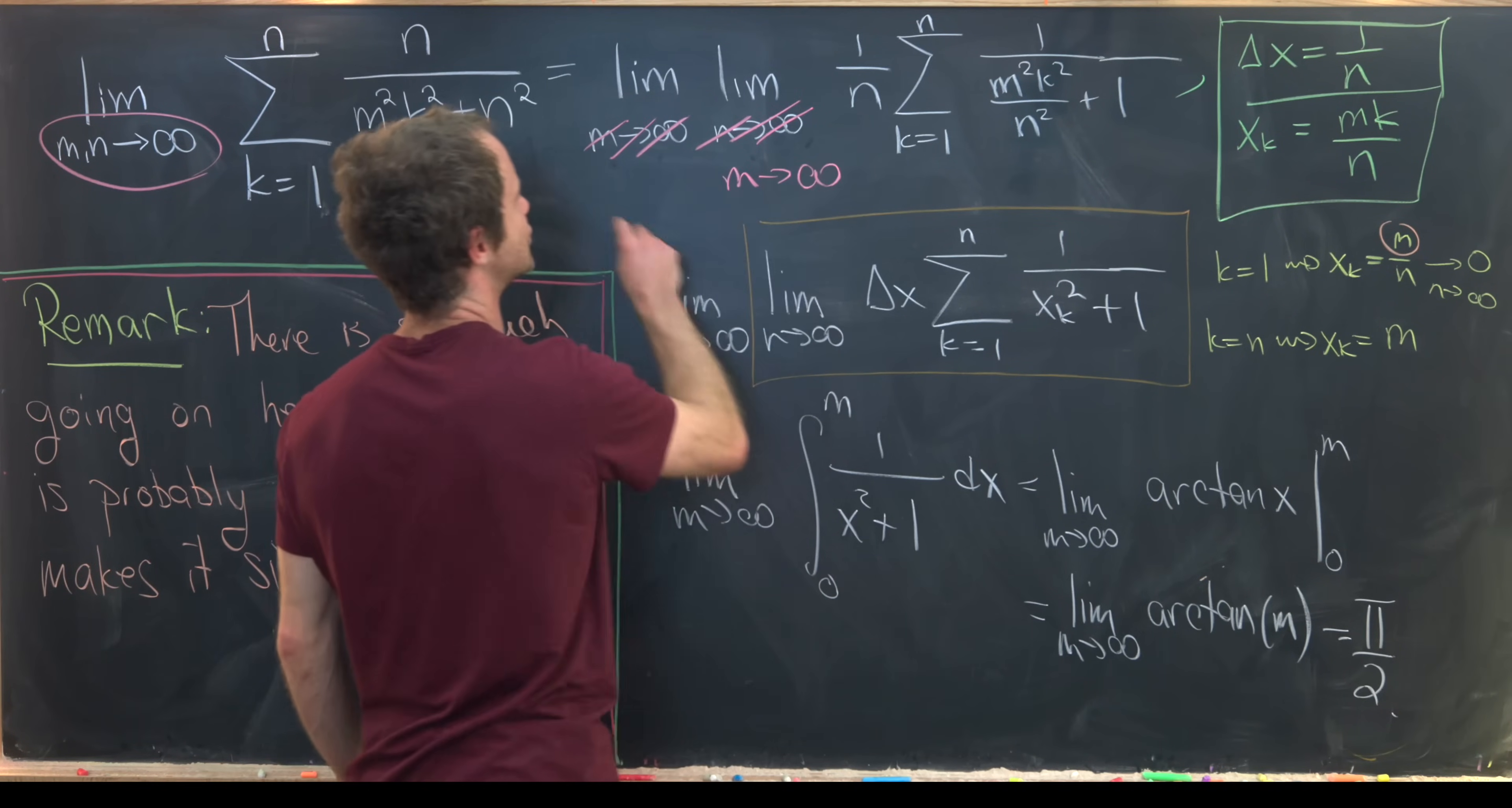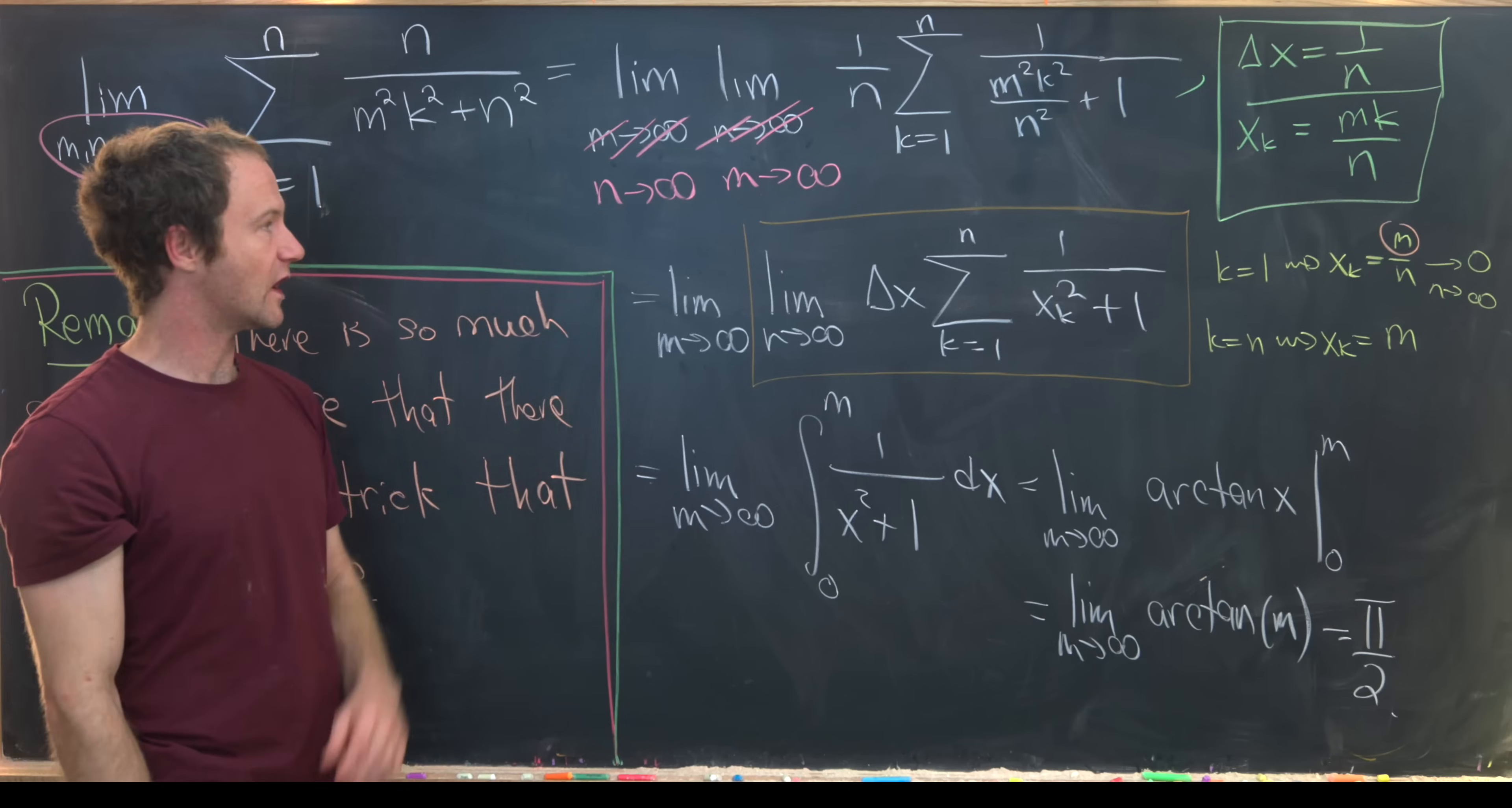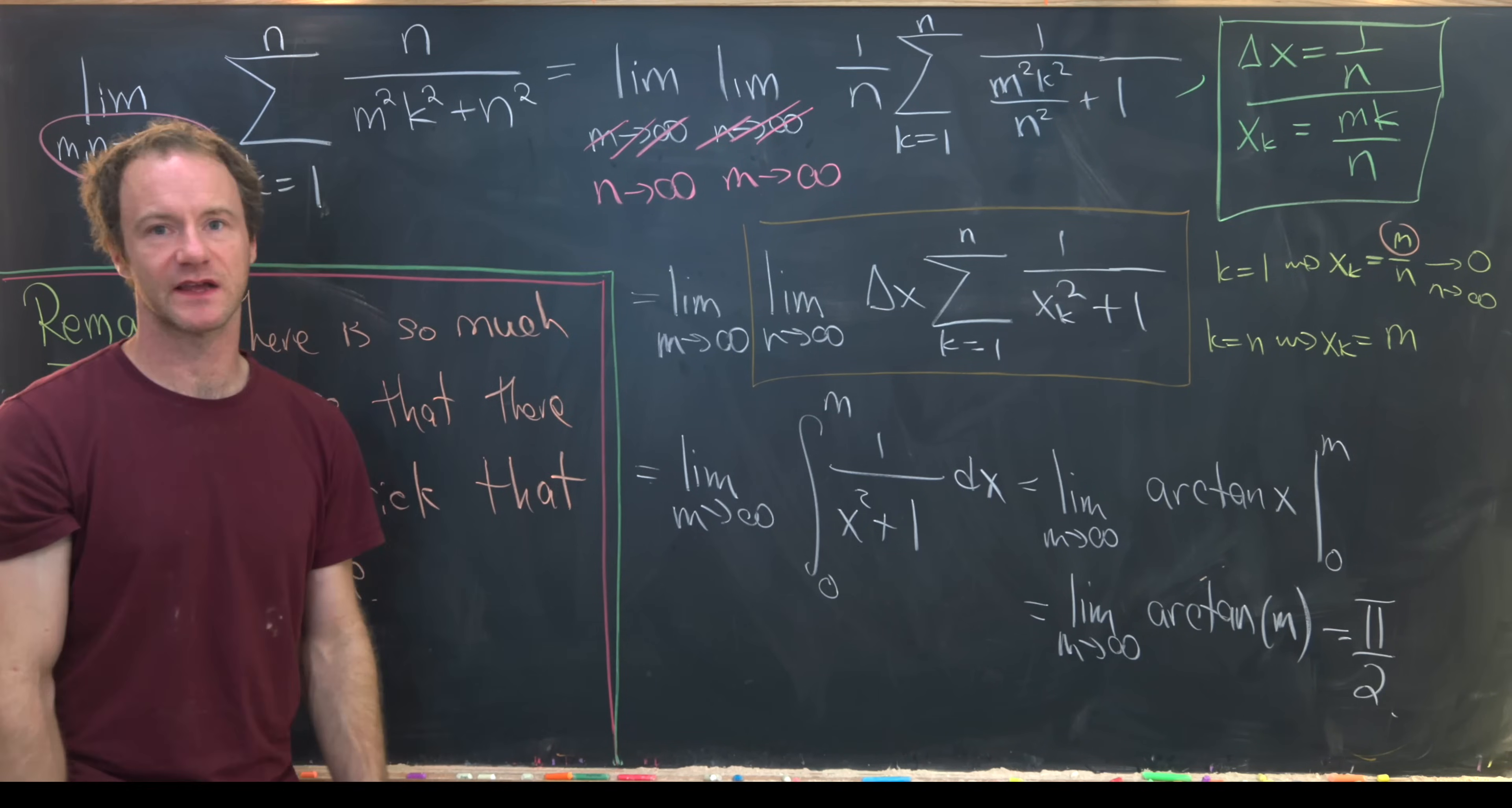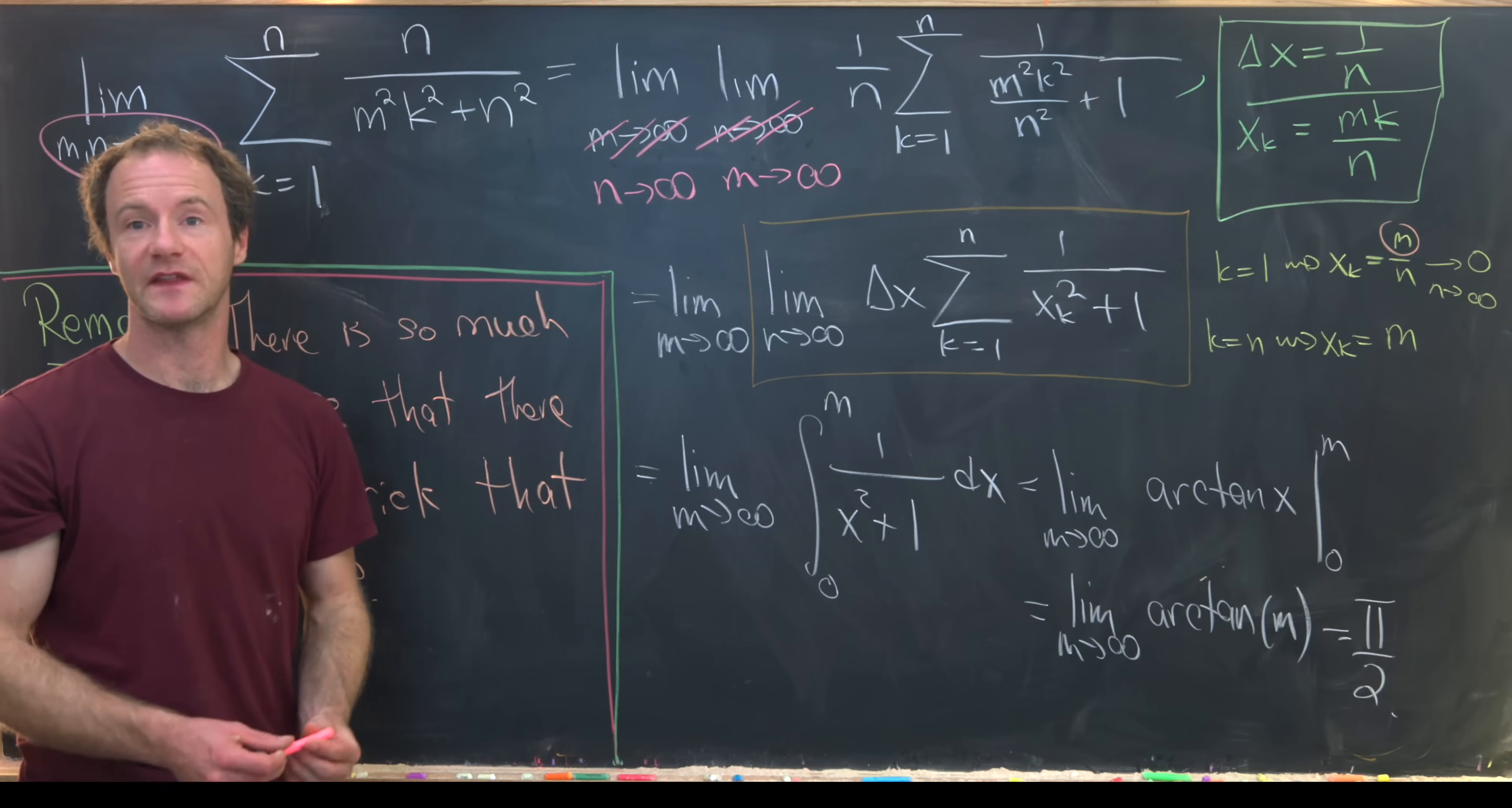I think it would maybe be a good homework exercise to see what happens if we change the order of these limits. If this is a well-behaved object, that should not affect the final answer, but I don't think that is super obvious just from looking at it. That's a good place to stop.